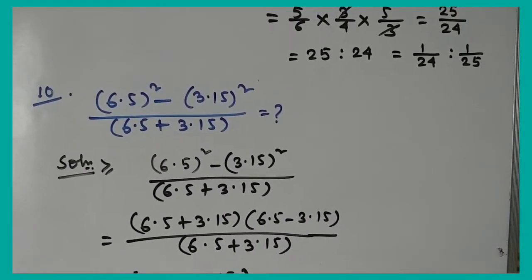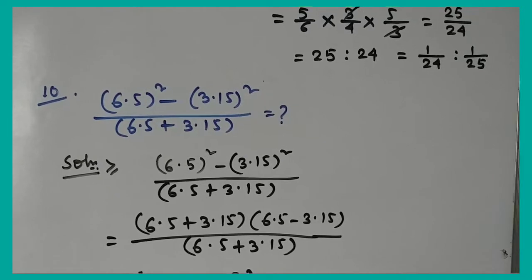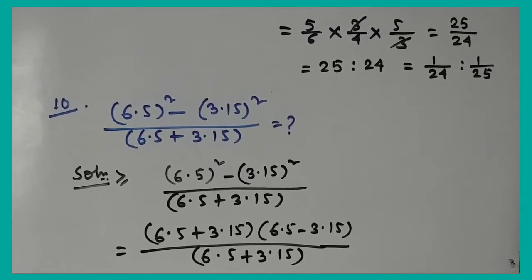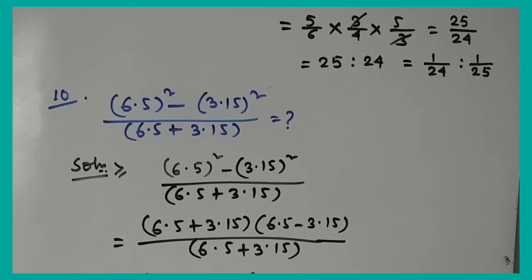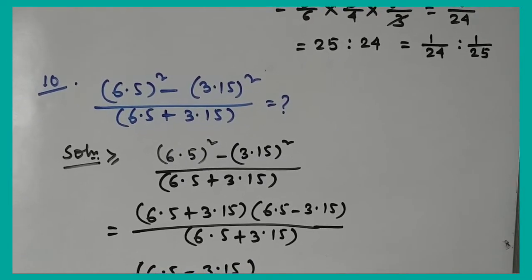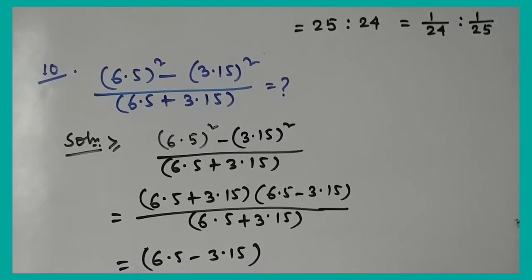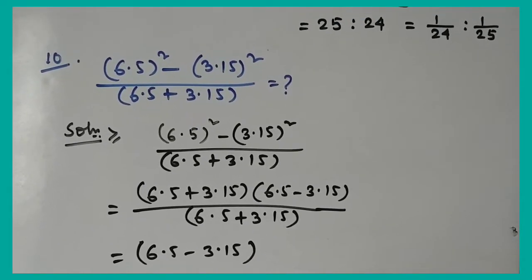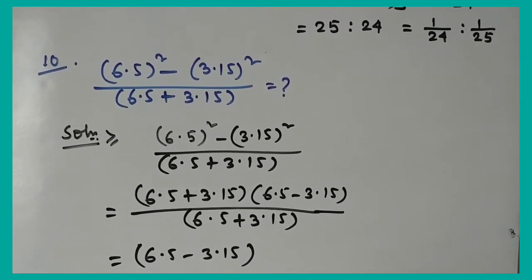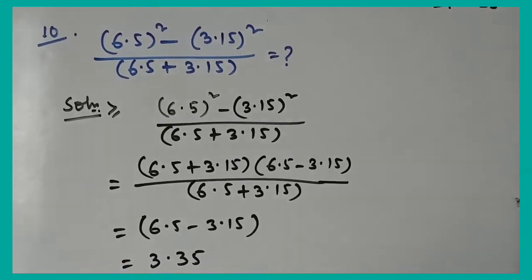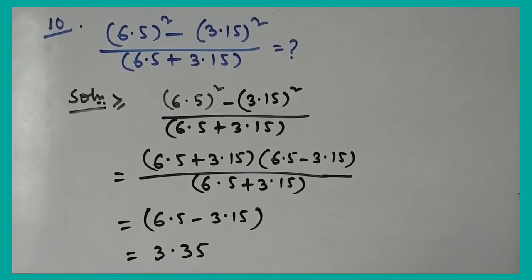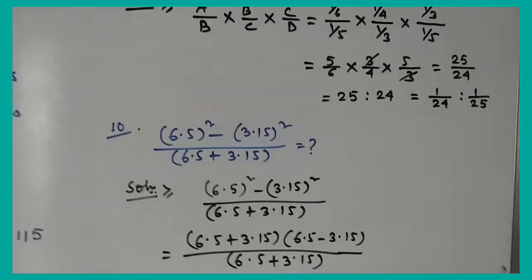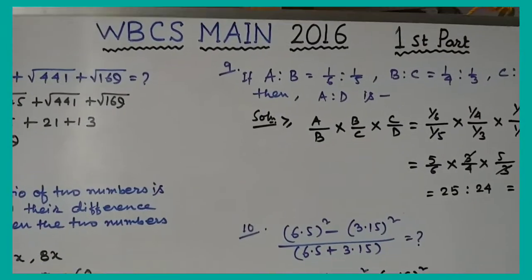Question number 10: (6.5² − 3.15²) / (6.5 + 3.15). Applying the formula a² − b² = (a+b)(a−b), the (a+b) term cancels, leaving a − b = 6.5 − 3.15 = 3.35.